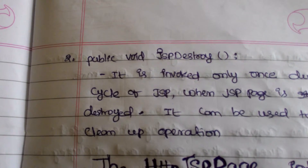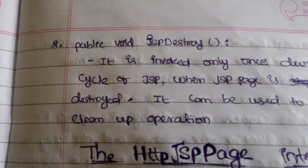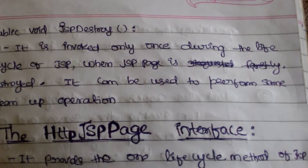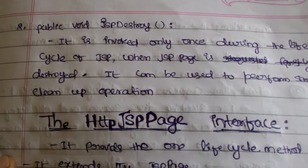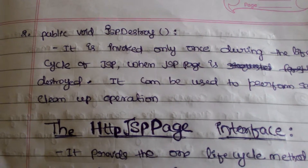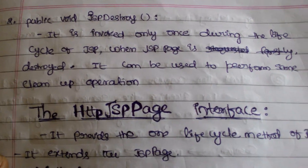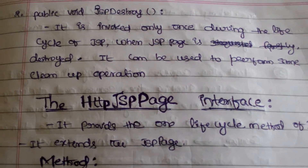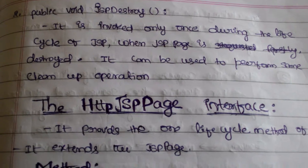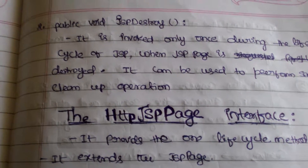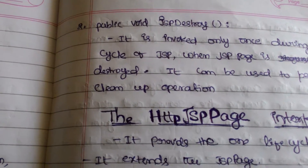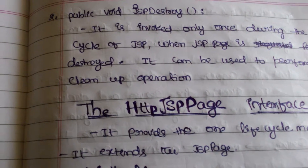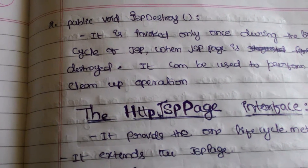The second method is public void jspDestroy(). It is invoked only once during the lifecycle of JSP when the JSP page is destroyed. It can be used to perform some cleanup operations. These jspInit and jspDestroy methods are invoked by the web container, like the servlet container.